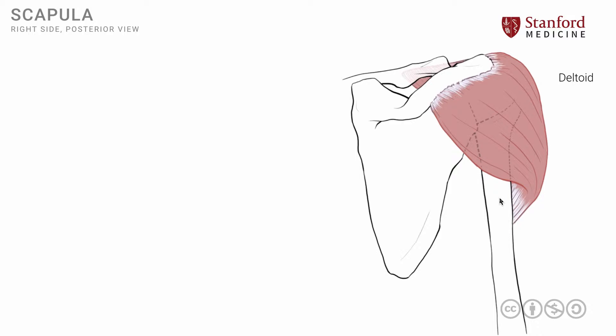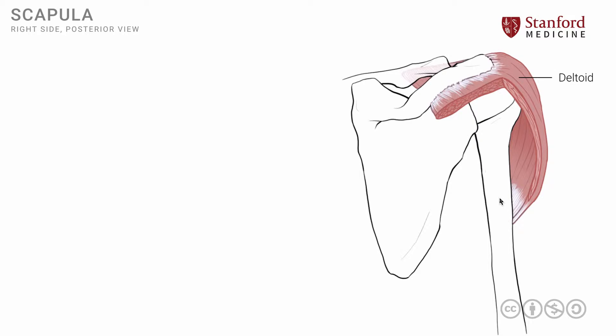I'm going to remove a small portion of this deltoid muscle, especially the posterior fibers, in order to make the deeper structures more visible. I have now cut out the posterior fibers here and here in order to make the deeper structures visible that we're interested in.